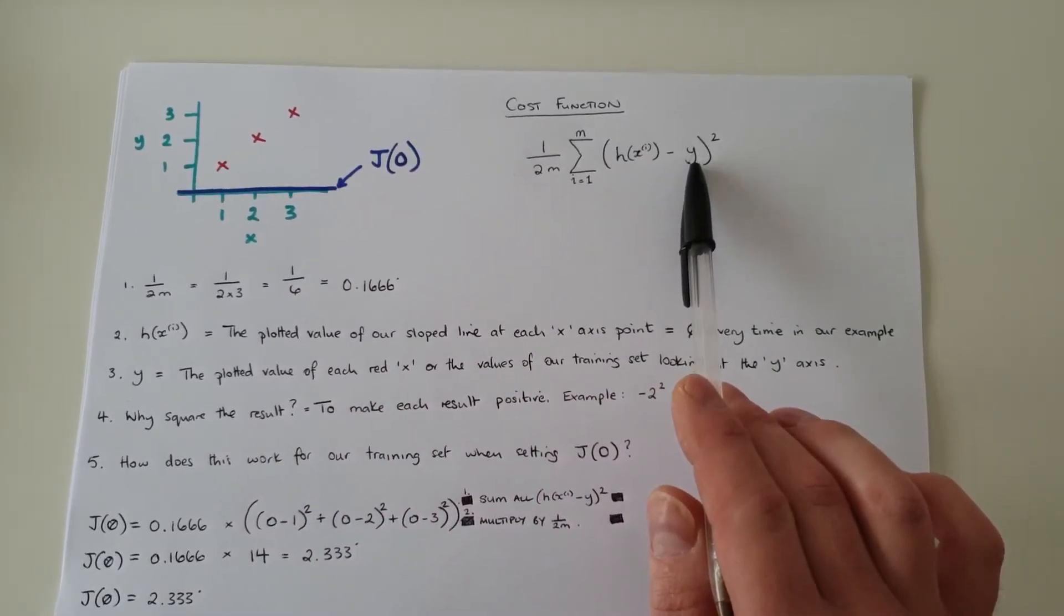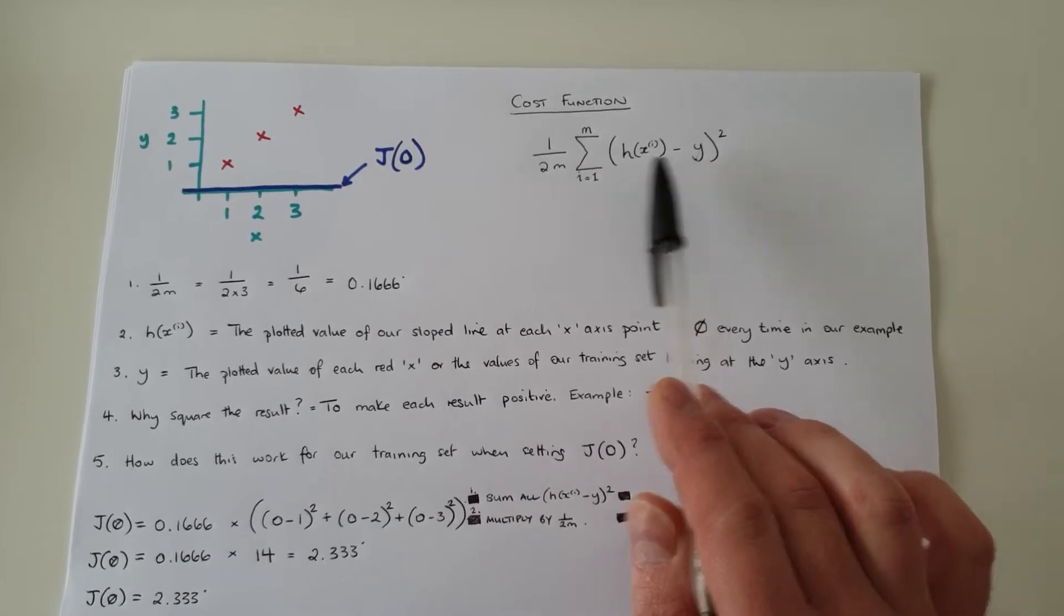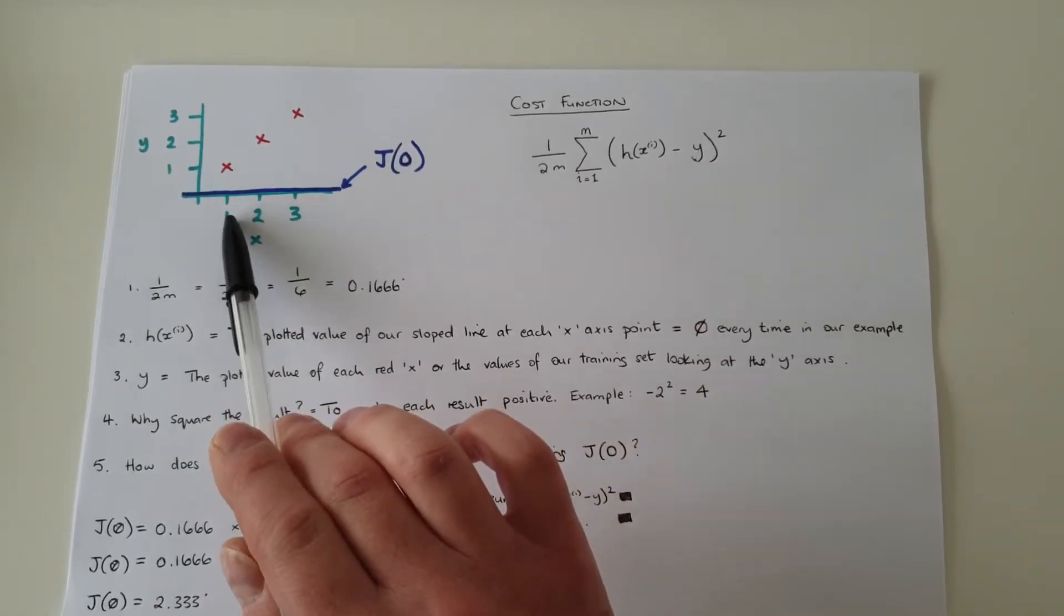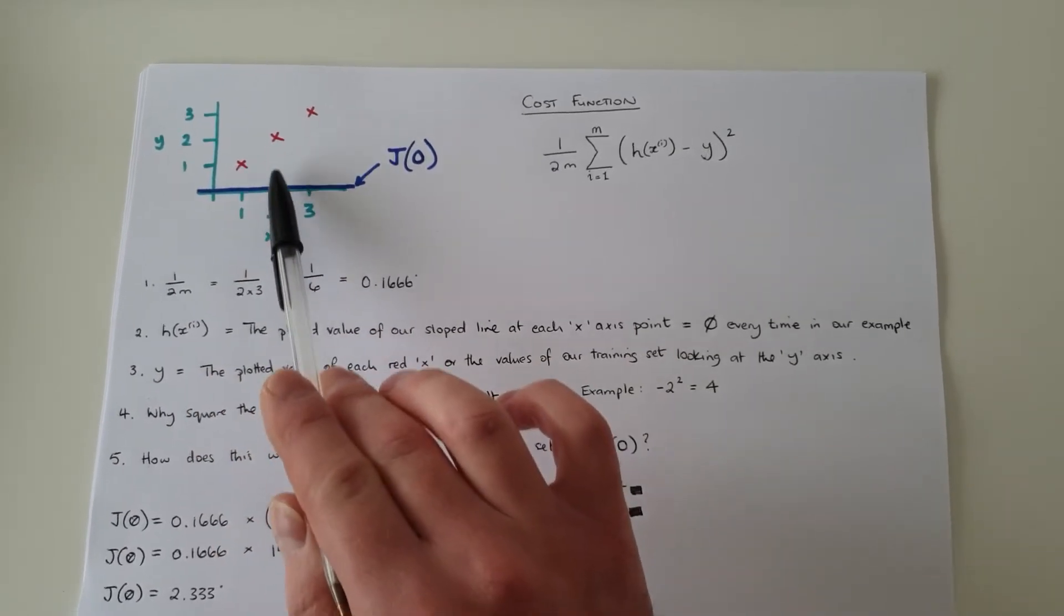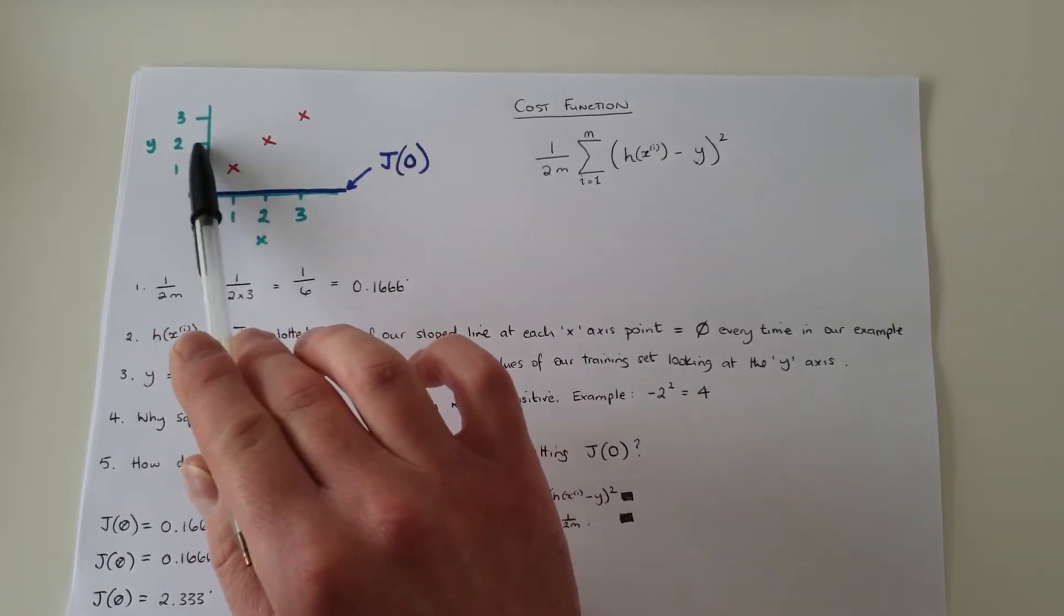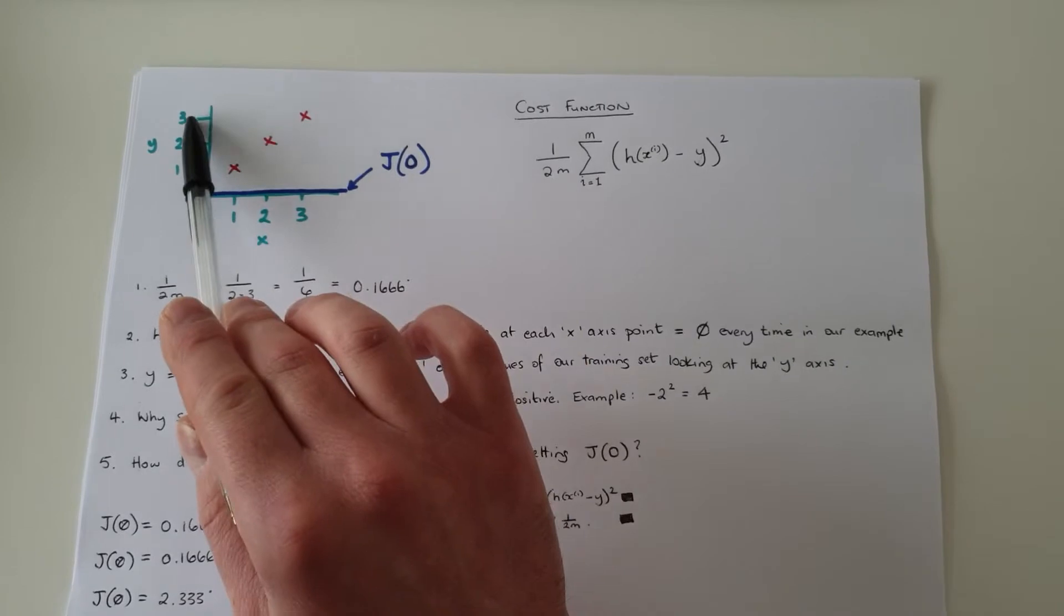y, on the other hand, that's our actual data and our actual results. y at one equals one, y at two equals two, and at three equals three.